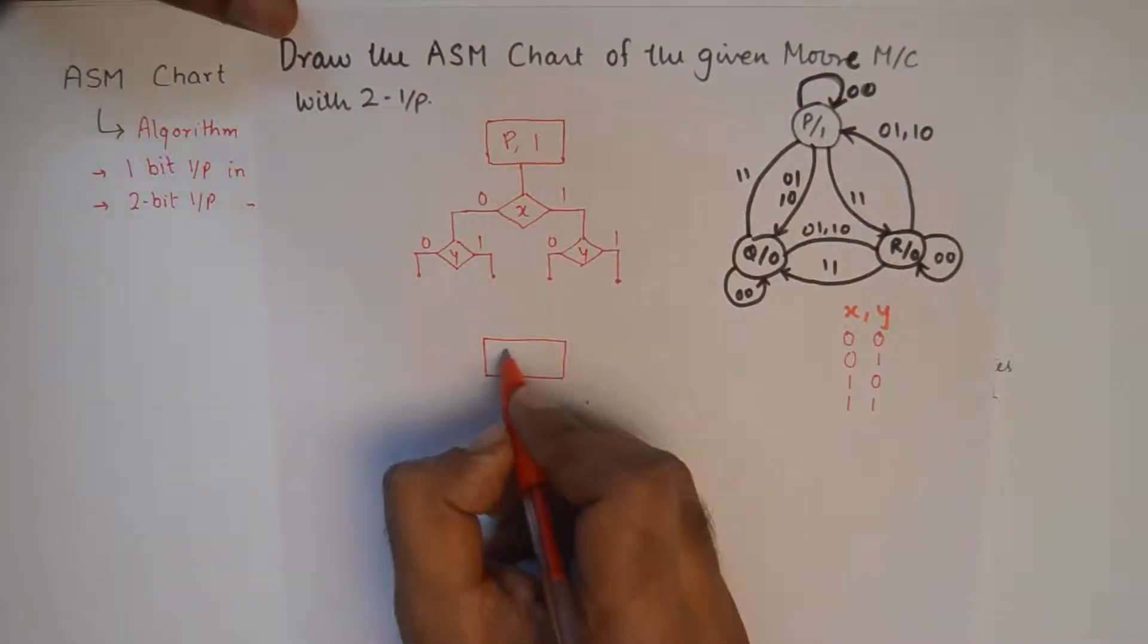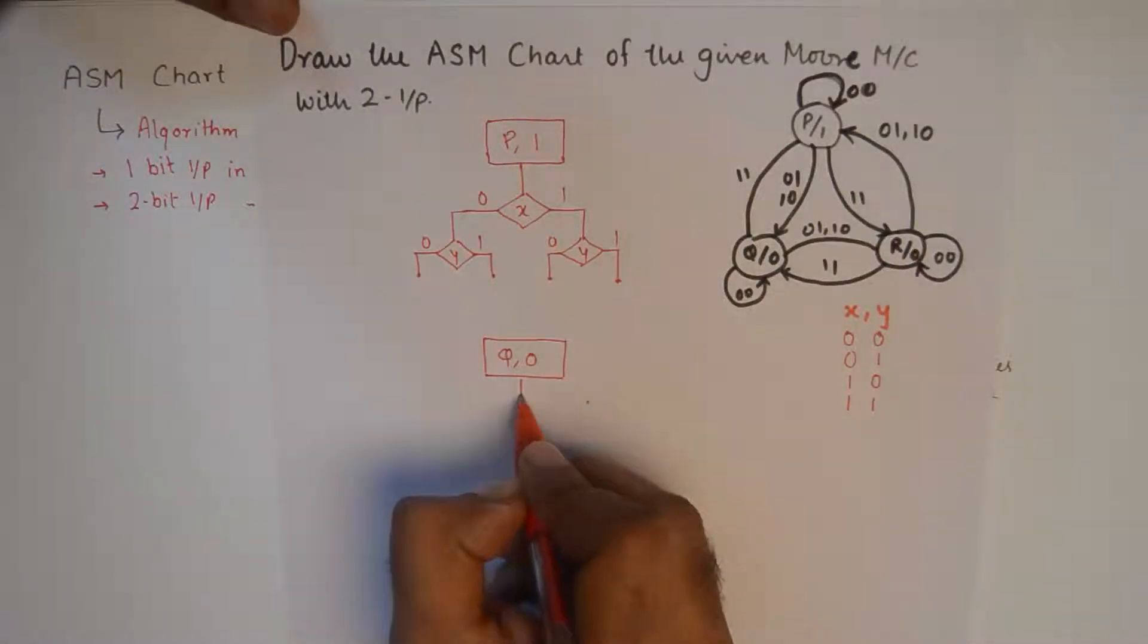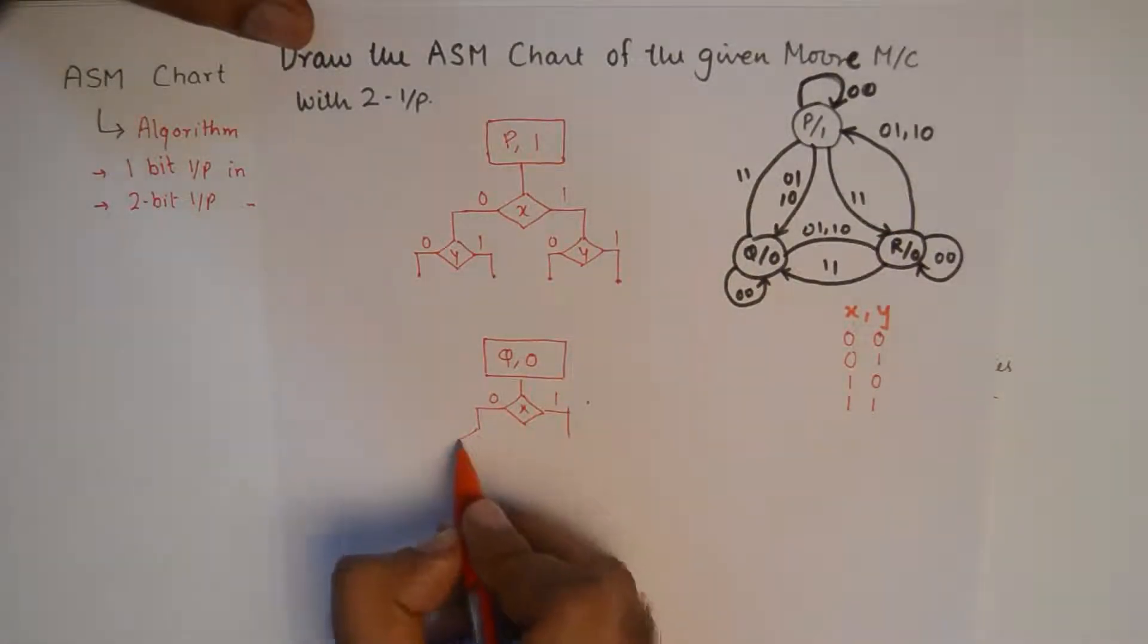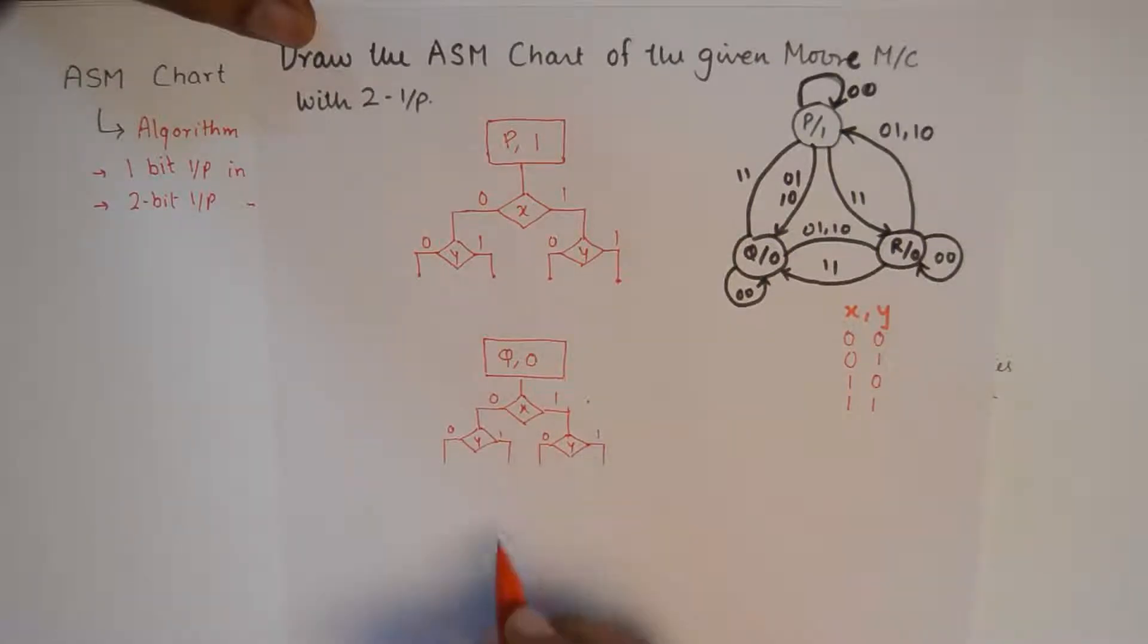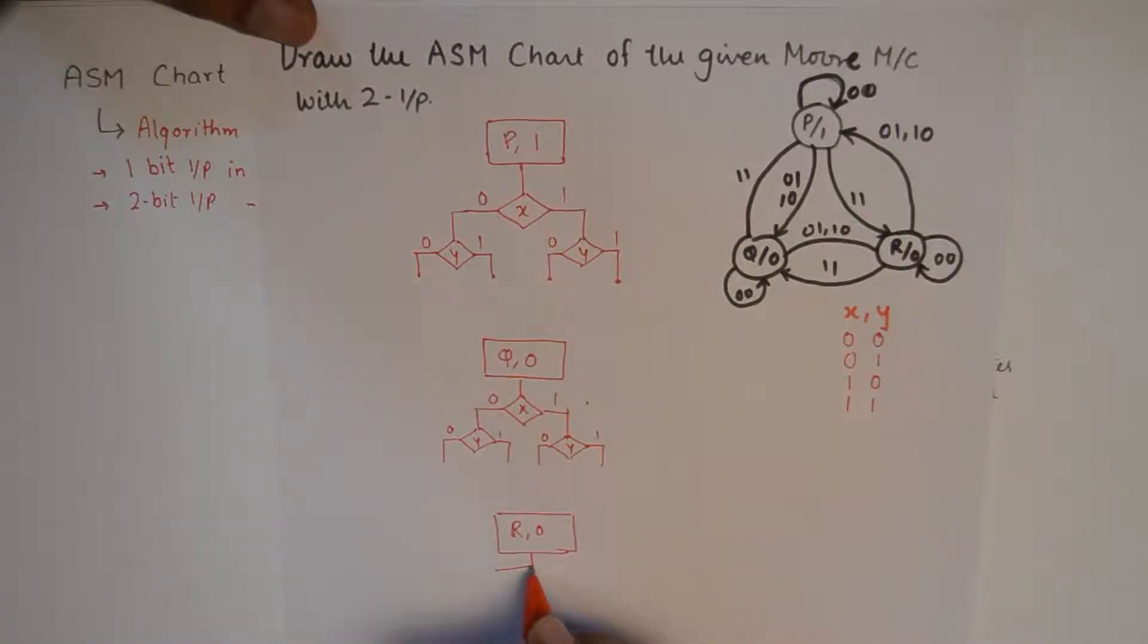Similarly we draw these decision boxes for all the states. Q which has an output 0, so I'll do x 0 1 again, y 0 1, y 0 1, y 0 1. And I'll go ahead with the final state R which has the output 0 1.